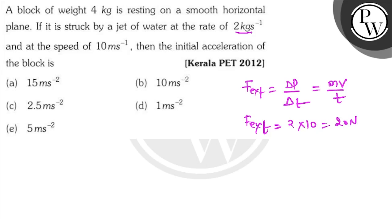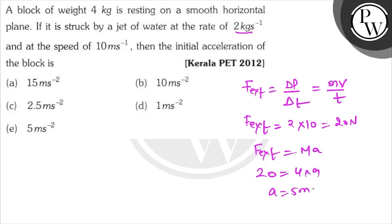This force acts on the water stream and also on the block. The acceleration of the block: F external equals mass into acceleration of block, so 20 equals 4 into a, therefore a equals 5 meter per second square. So our answer to the question is option E. All the best!